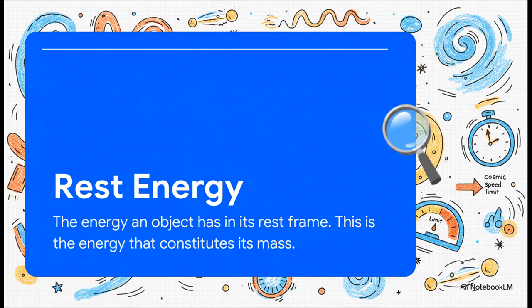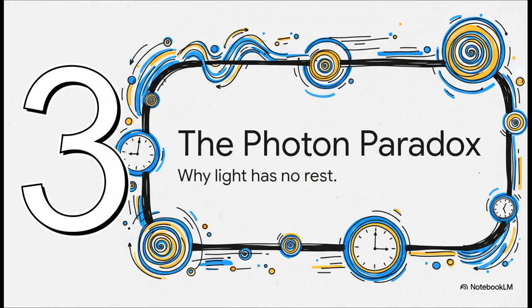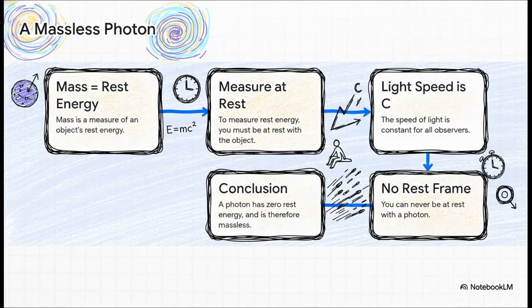And now, with this new tool, we can finally go back and solve that photon paradox. Back to our original question about the photon. Now that we're armed with this new definition of mass, the answer just clicks into place beautifully. Just follow the logic here because it's so elegant. Step 1. We now know that mass is rest energy. Step 2. To measure rest energy, you have to be in the object's rest frame, basically flying alongside it so it looks still. But then you hit step 3. The unbreakable rule of the universe. The speed of light is the same for everybody. Which means you can never catch up to a photon and be at rest with it. So if an object has no rest frame, it can have no rest energy. And no rest energy means zero mass. Boom! Paradox solved.